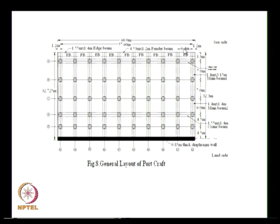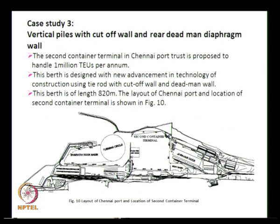The berth plan shows the sea side and land side. Two crane beams are provided — one on the sea side and one on the land side, with the center-to-center distance defining the crane beam span. The rear diaphragm wall is about 3.3 meters from the land side crane beam. Bollards and fenders are provided on the sea side, requiring a fender beam. Cross beams connect the structural elements, and the slab is positioned on top of the structure.